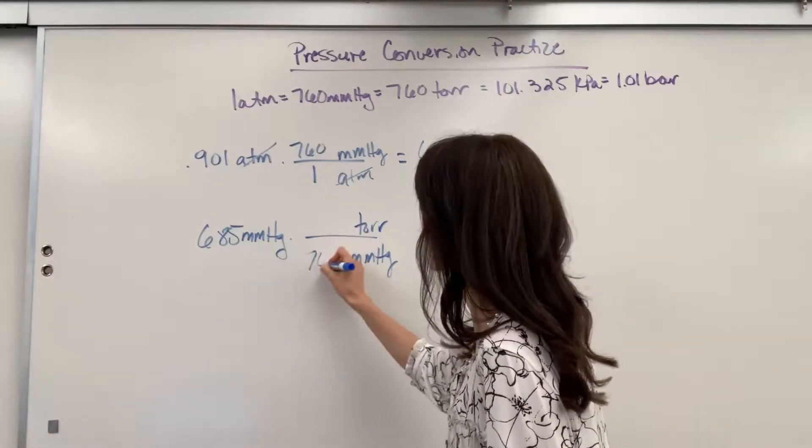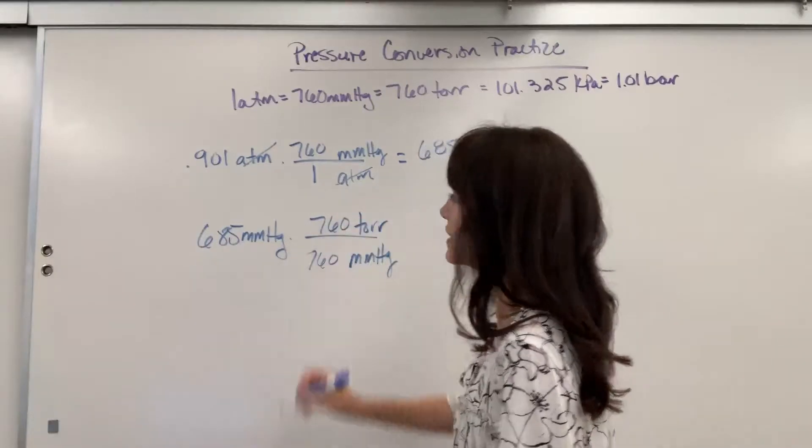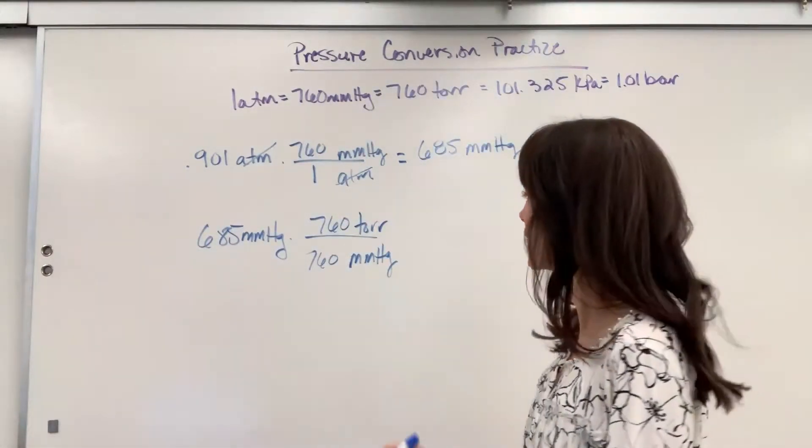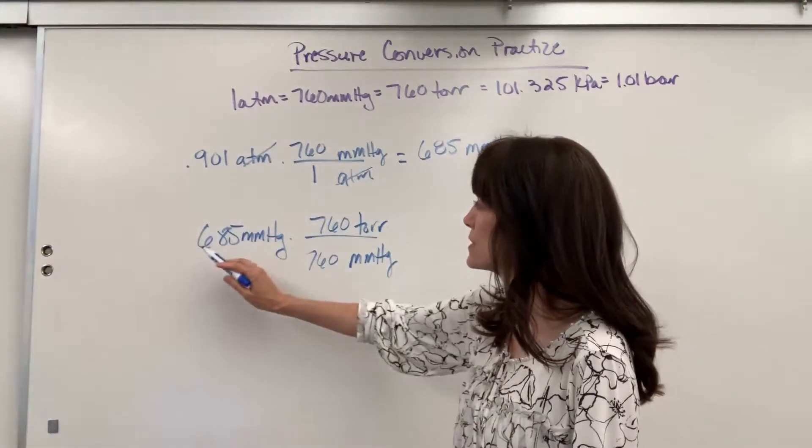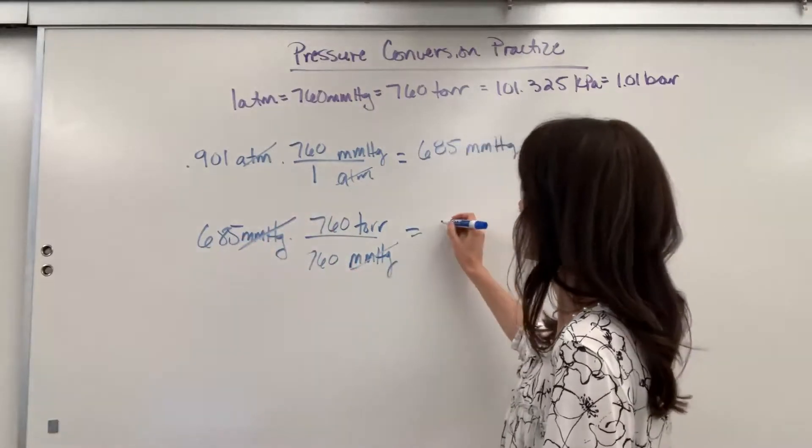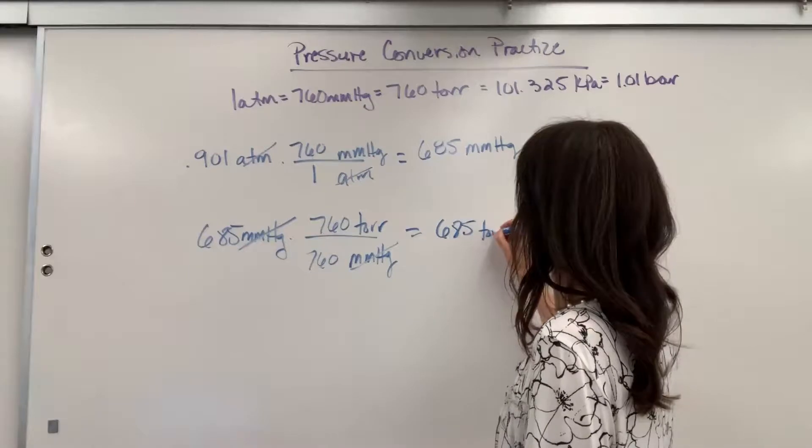So we have 760 millimeters of mercury equals 760 torr. It's the same thing. So if you do 685 times 760 divided by 760, millimeters of mercury cancel, you're going to have 685 torr.